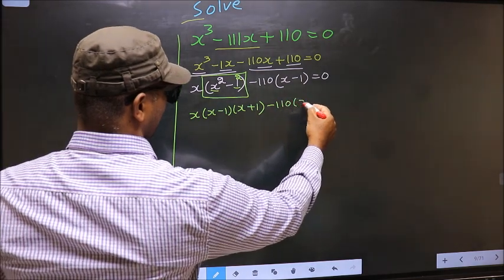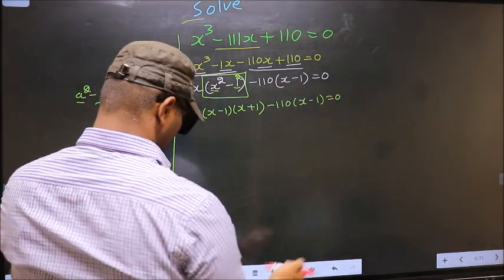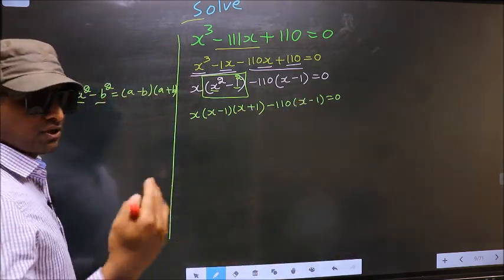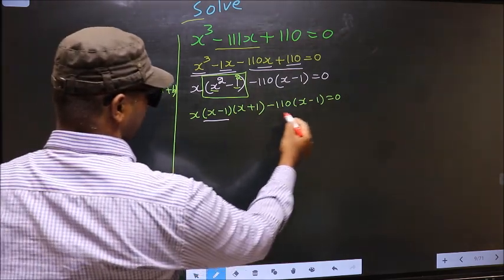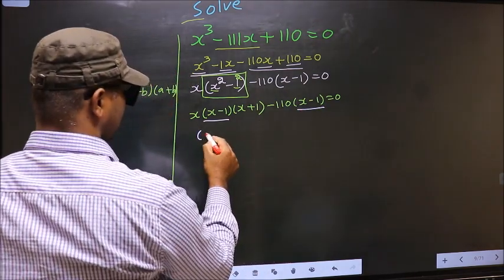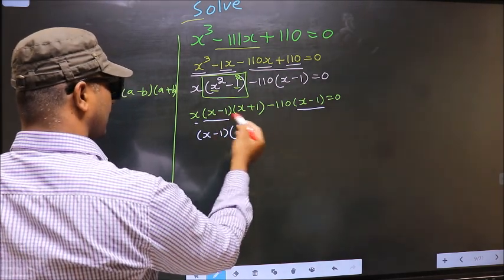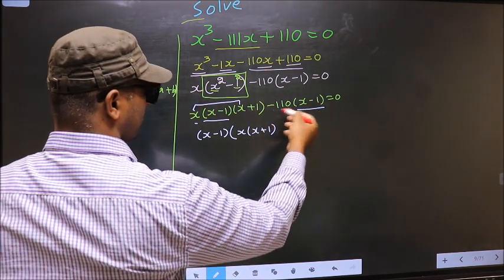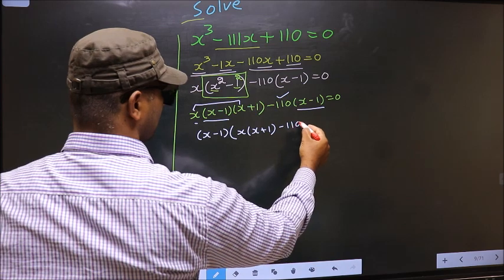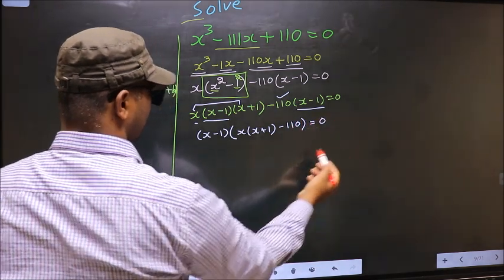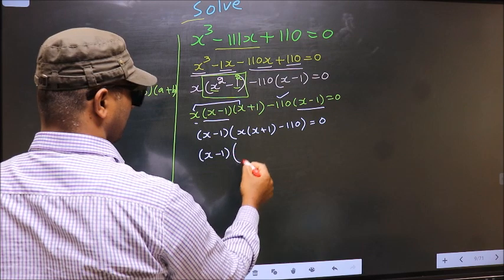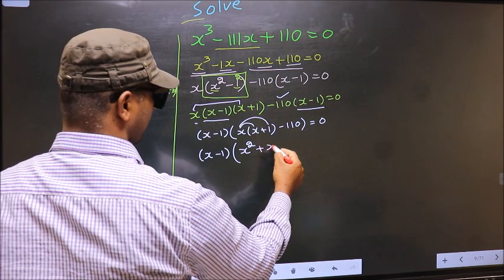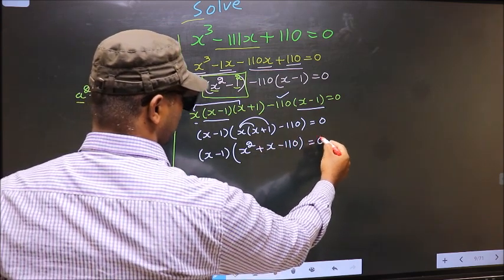Next, from the entire equation, what can be taken out common is (x - 1). So (x - 1) goes outside, and we are left with x(x + 1) minus 110 equal to zero. Now opening up the brackets gives us x² + x - 110 equal to zero.